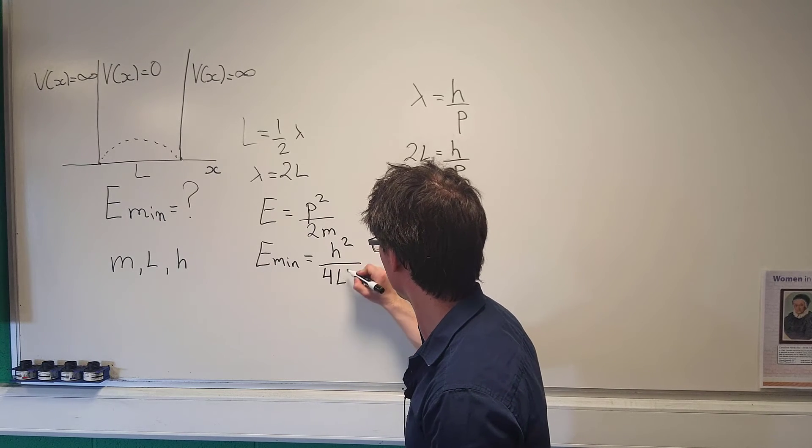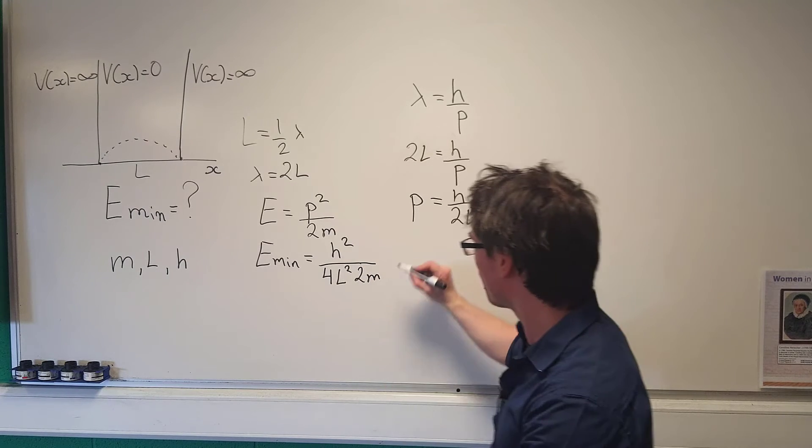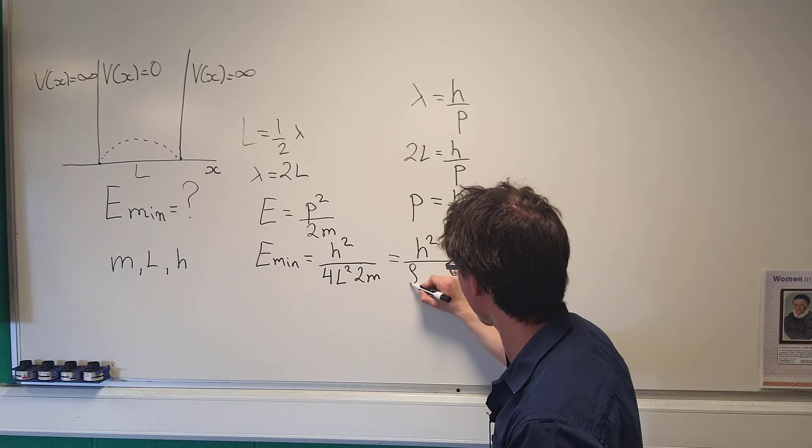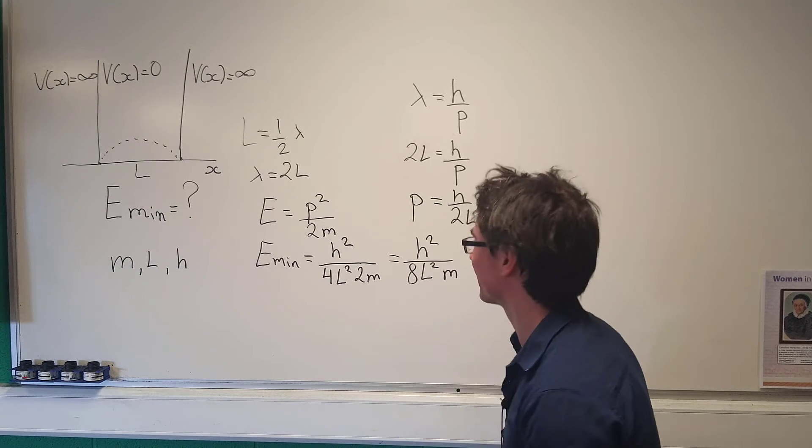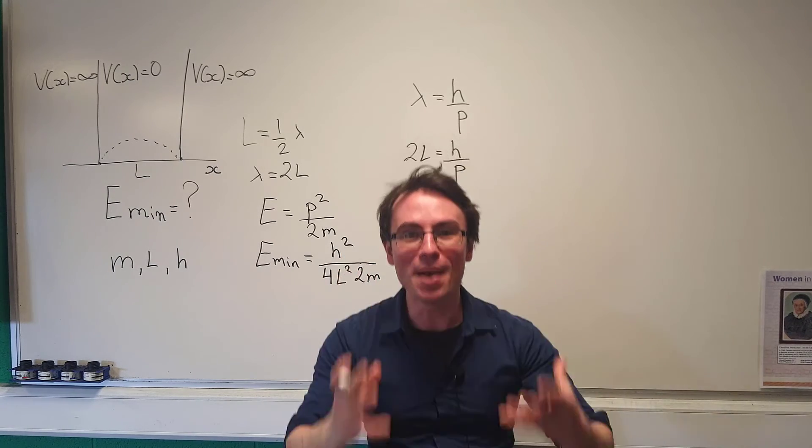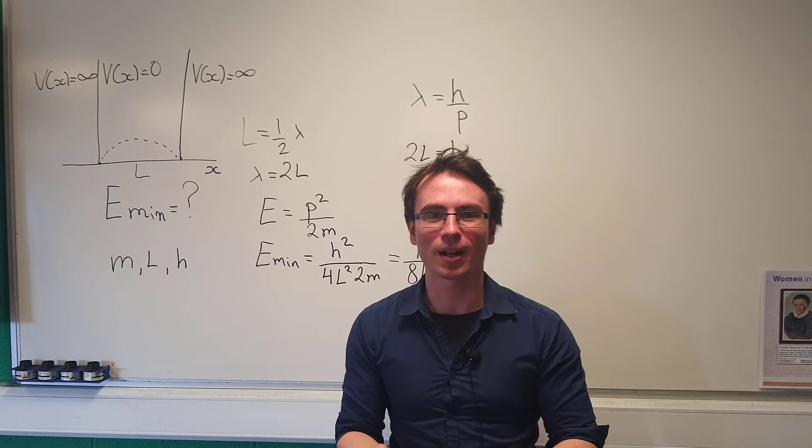We can just rewrite this as h squared over 8L squared times m, and this here is an expression for the minimum energy of this particle in a box.